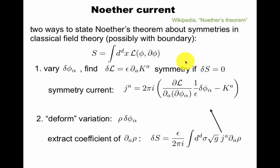There are two ways to state Noether's theorem, and the first one you should be familiar with from classical field theory. If you vary your field, you will find a variation of the Lagrangian. If it can be expressed as a total derivative that vanishes when you integrate, then you still have the symmetric current.